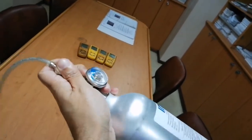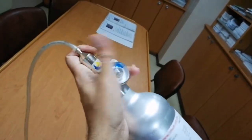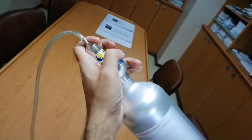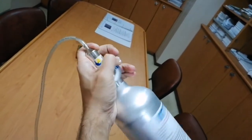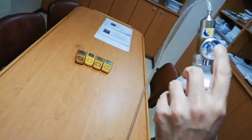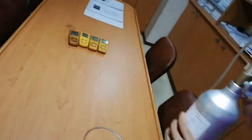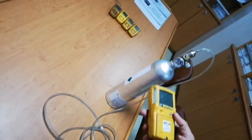First, we're going to fix this regulator to this span gas cylinder. Make sure you have sufficient positive pressure inside the span gas cylinder for calibration. We have positive pressure here—it's enough for calibration.